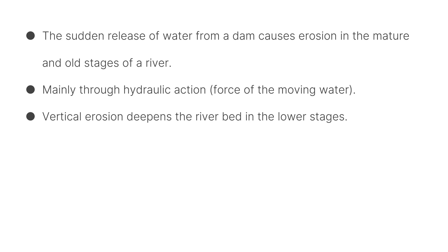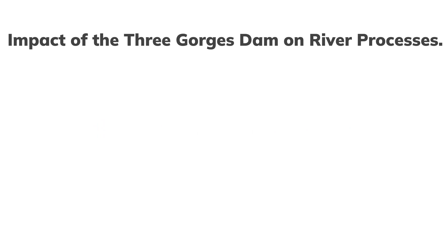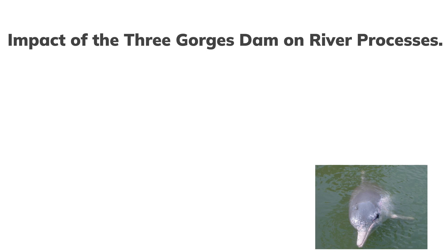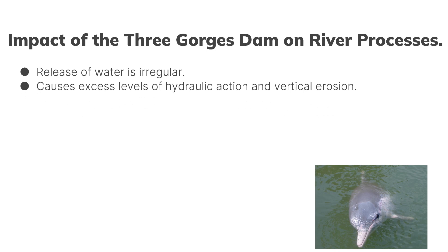It's always good to use examples in geography because it means you're relating what you learned to the real world. The dam I like to use is the Three Gorges Dam — the impacts are generally the same regardless of which dam your teacher picked. The release of water is irregular because they open and close gates at different times with different amounts open, so the amount of water that comes out varies. This can at times cause excess levels of hydraulic action and vertical erosion, and sometimes there isn't much because they don't release too much water.